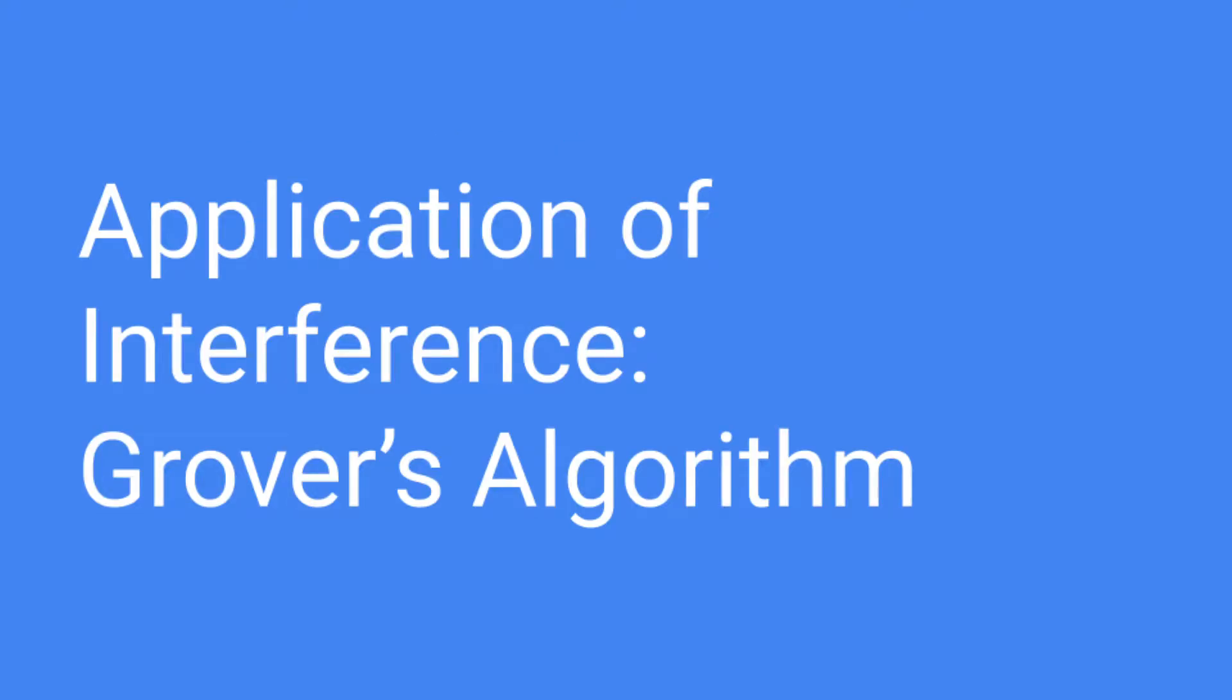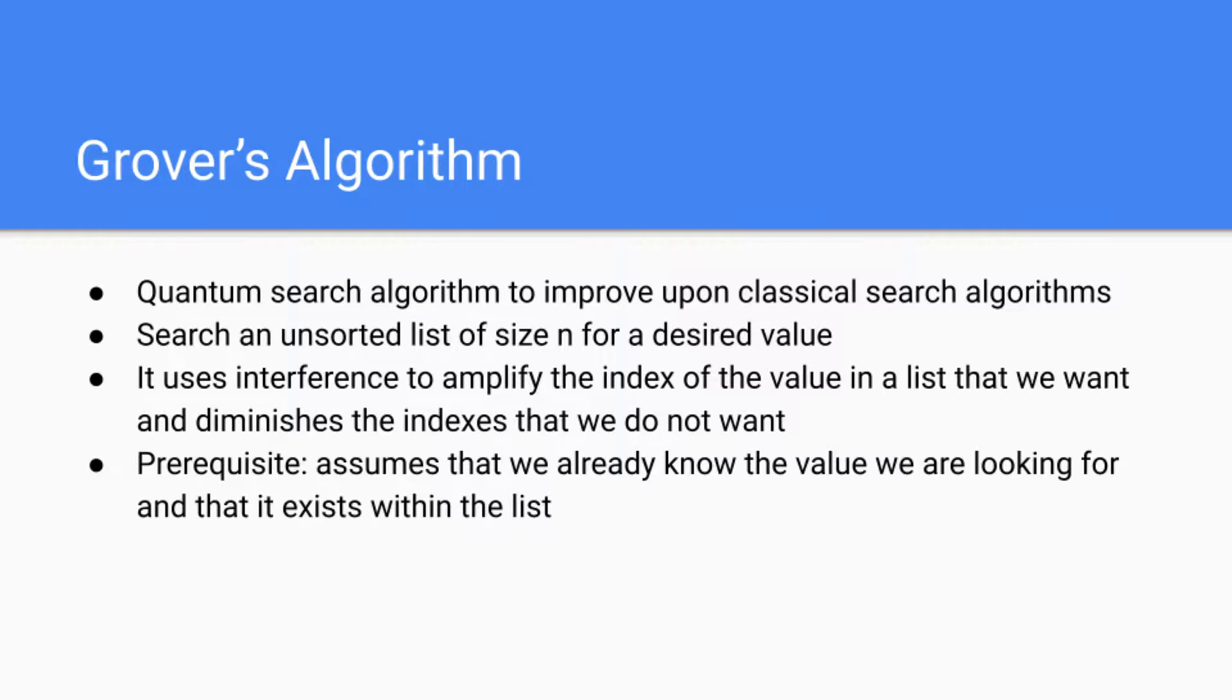One of the most prevalent applications of quantum interference in an algorithm is within Grover's algorithm. We'll take a look at Grover's algorithm for the rest of the lecture. Grover's algorithm is a quantum search algorithm designed to improve upon classical search algorithms. It will search an unsorted list of size n for a desired value. It uses interference within the algorithm to amplify the index of the value in a list that we want, and diminishes the indexes that we do not want. The prerequisite of this algorithm is that we already know the value that we're looking for, and that it exists in the list.